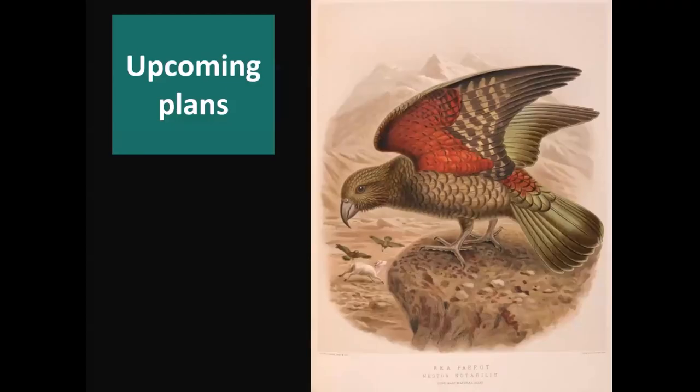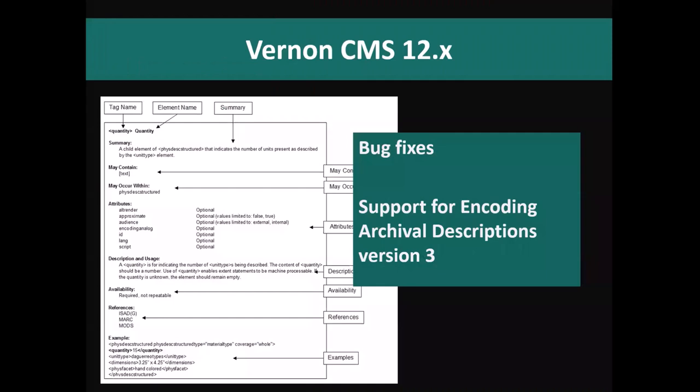Looking at upcoming plans, we'll be continuing with minor releases, which are primarily aimed at bug fixes but can also include minor enhancements. One example is that the Encoded Archival Descriptions standard is supported by Vernon as a way of outputting object records — there's a new version of that XML standard, so there are some small changes needed in the output coming from Vernon to support that standard.